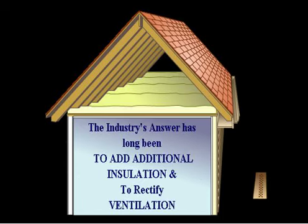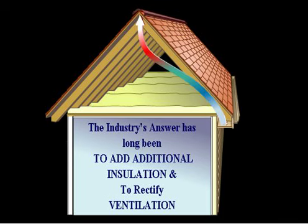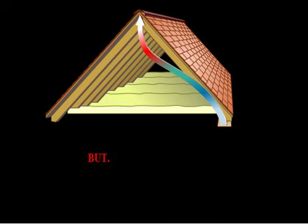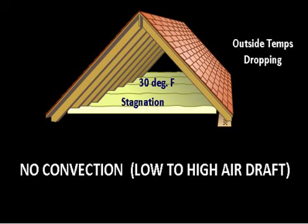Today's industry answer has been to add additional insulation and to rectify the ventilation, but that's not going to do it. You still have mold in attics with proper ventilation — ventilation is not going to solve it. The insulation cools the attic right down. When outside temperatures drop in wintertime, there's no convection — the attic is stagnant. You can't get passive ventilation when temperatures outside are dropping and it's actually colder inside than outside.